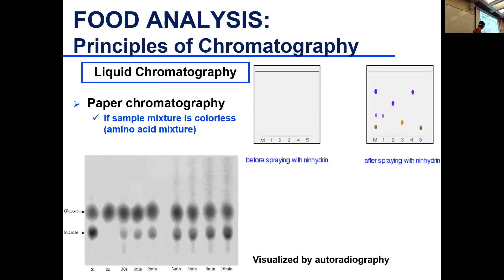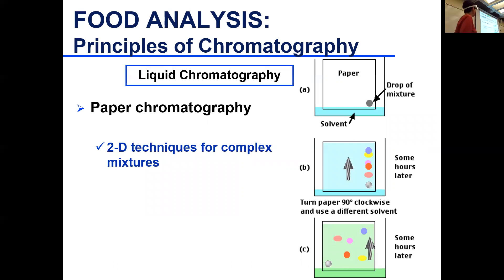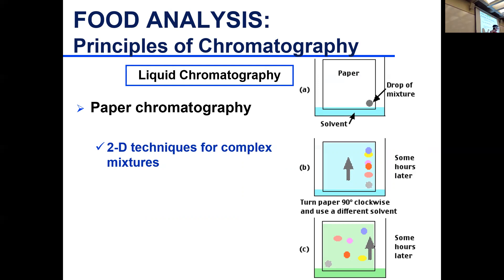In this example, we're separating glucose from sucrose and potentially another sugar. Sometimes compounds don't separate well and you get overlap. You can try a second solvent that enhances resolution — this is called 2D chromatography. You do the first dimensional separation, flip the paper, and immerse it in another solvent for further separation.